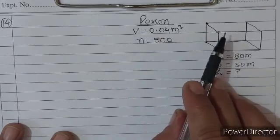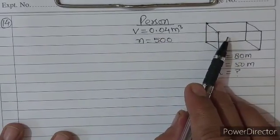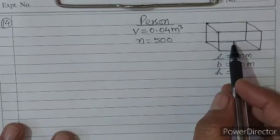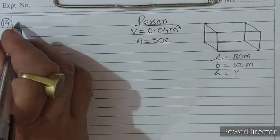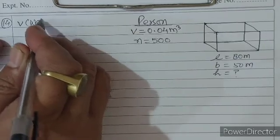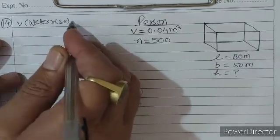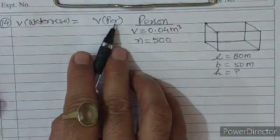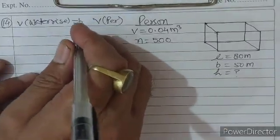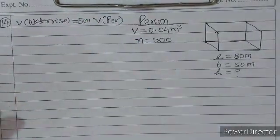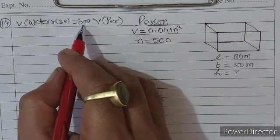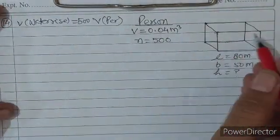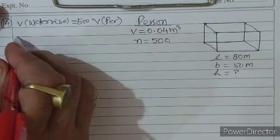500 लोग एक rectangular tank में जाएंगे जो 80 m × 50 m है। 500 लोग पानी भरे cuboid के अंदर जाएंगे तो water level कितना बढ़ेगा? Volume of water rise = volume of persons। एक आदमी का volume × 500 = water level की height का volume।